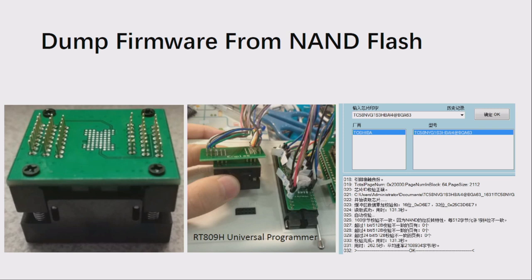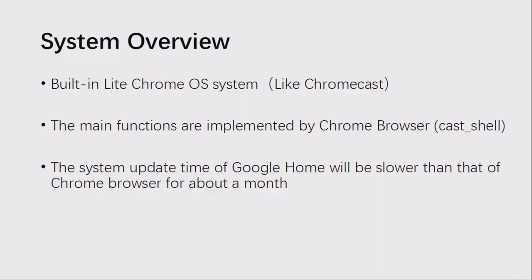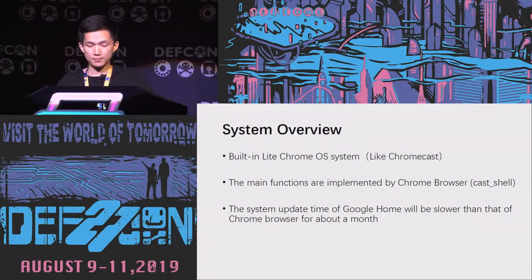The finished adapter was connected to the RT908H programmer, a universal programmer that supports reading and writing most flash chips. Finally, we obtained the NAND image data from Google Home's flash chip. We also needed to process the OOB data and ECC error correction according to the data sheet to extract the complete system firmware. By analyzing the system files, we confirmed that Google Home is using a lightweight Chromium OS, with main functions implemented by the Chromium browser.